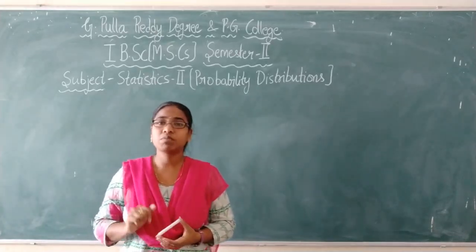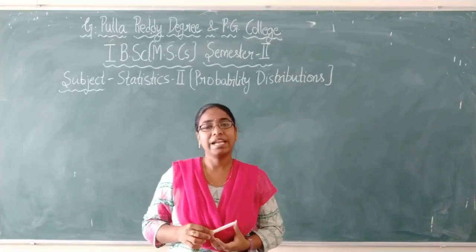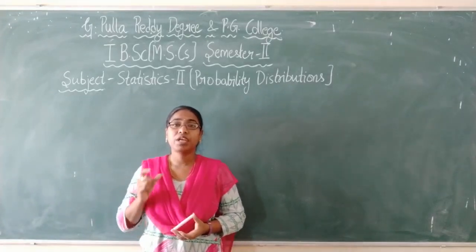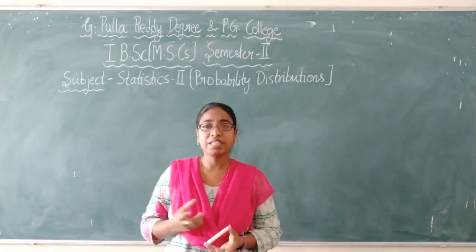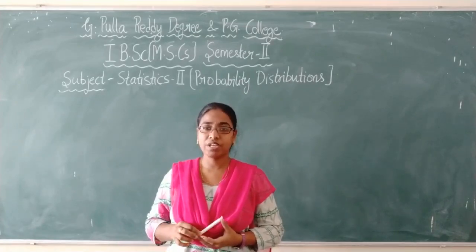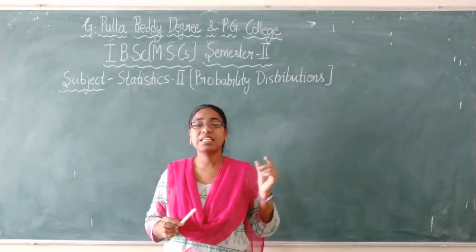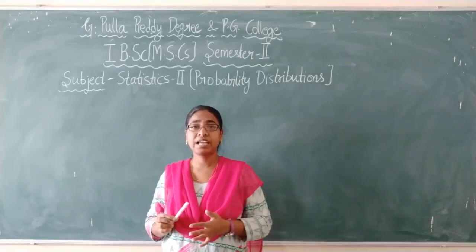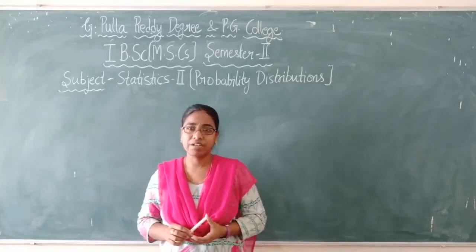We have two types of random variables: one is discrete random variable and the other is continuous random variable. A discrete random variable has a countable or finite number of values. For a continuous random variable, the value of the random variable lies within specified limits — for example, x is between 2 to 3 or 4 to 5.